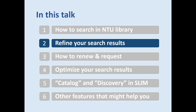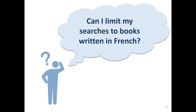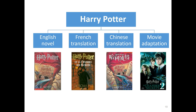In the second part, I will introduce how to refine the search results. If I want to find a book written in French but get a large number of results on Sling, can I limit my searches to books written in French? Let me give you an example. Harry Potter is an English novel. It's translated into different languages such as French and Chinese, and it also has movie adaptations. Now, I want to find the French translation of Harry Potter.